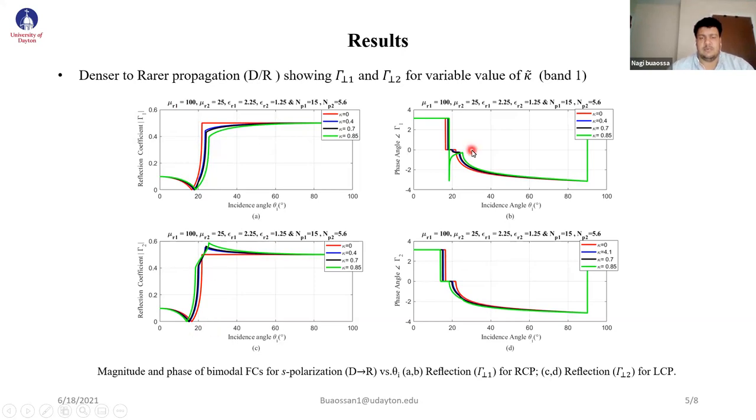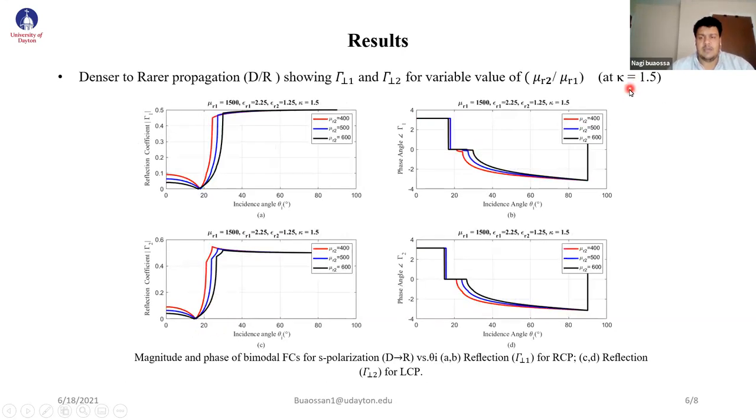By changing the kappa value, it shifts to the right in the RCP mode, but shifts to the left in the LCP mode. When we make kappa constant and change the second material, we still see the anomalous Brewster angle. Both modes RCP and LCP shift to the right by changing the material.